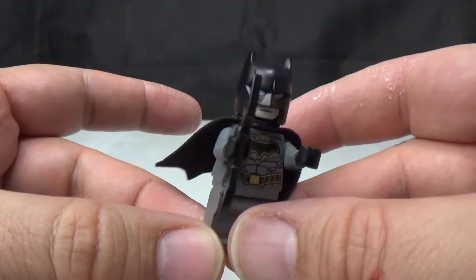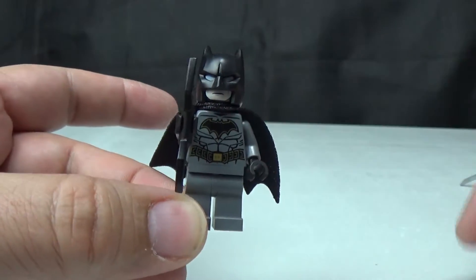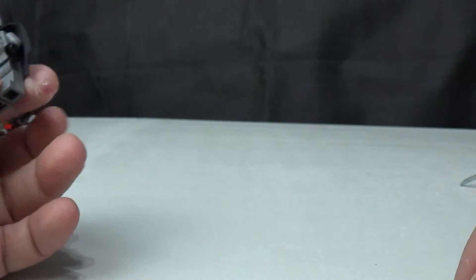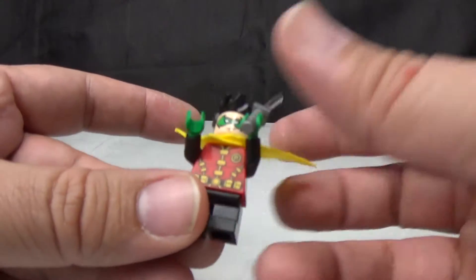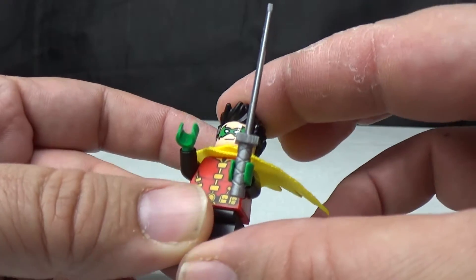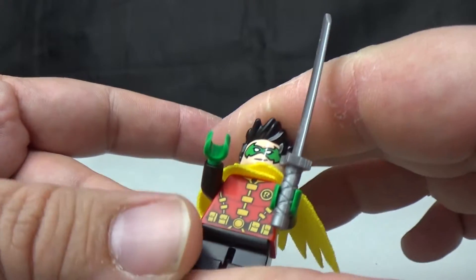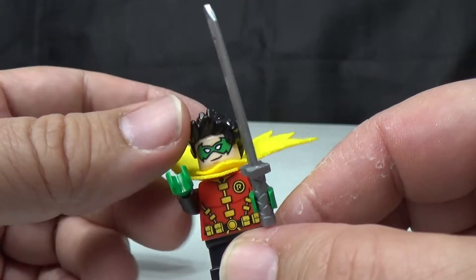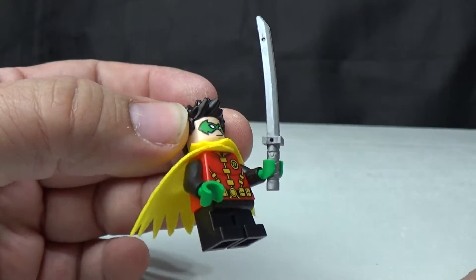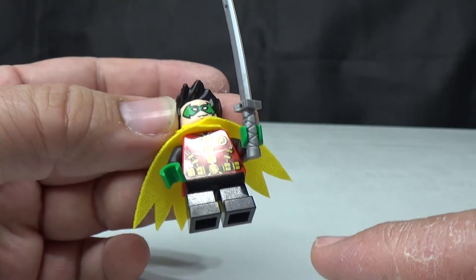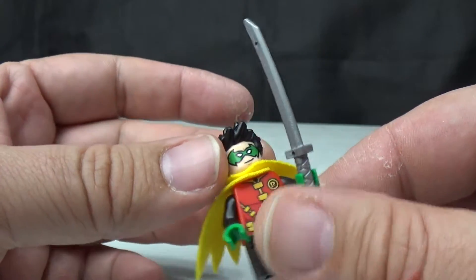I watched the LEGO Batman movie the other day. I like it. I am not afraid or ashamed to say that I like it. Here we have Robin who looks fairly cool. I like this Robin much better than the one in the LEGO Batman movie. This is the one that doesn't show off all the skin, and he comes with swords.